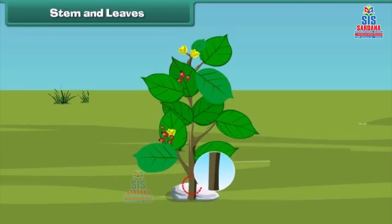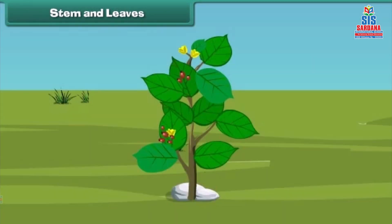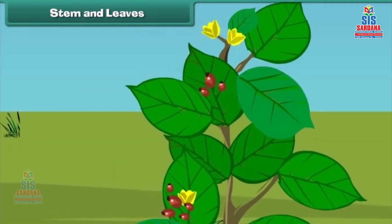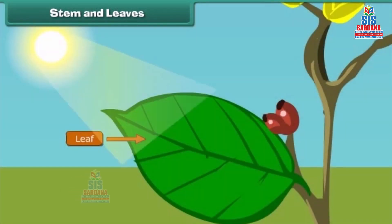The next part of the plant is the stem. A stem is the hard part of the plant which grows above the ground. It bears leaves, fruits, and flowers. A stem also supports plants. Do you know which part of the plant helps them to prepare food? It is the leaves. Leaves are green in color and are born out of a stem.